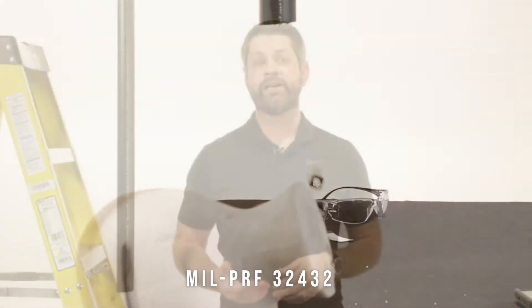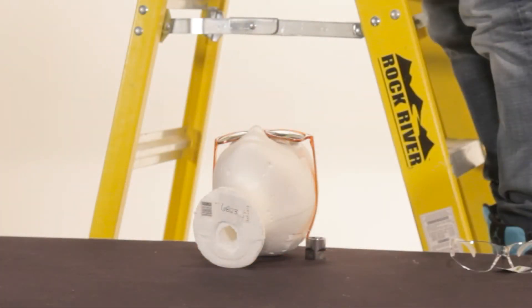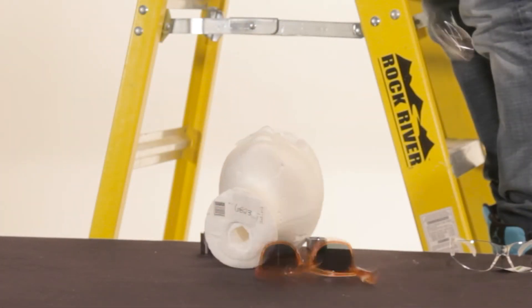As you can see, this test proves the Z87.1 stamp is an indicator of good but not great protection, as even our non-rated sunglasses passed the first phase of the simulation. To earn the Z87 Plus stamp, which is what qualifies them to be used in impact hazard areas, the glasses must pass three additional tests described earlier.